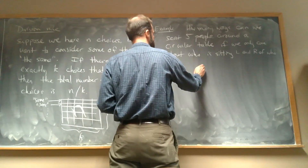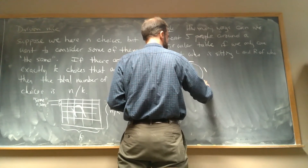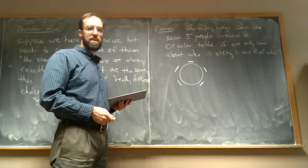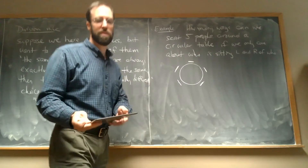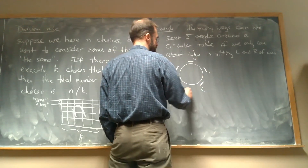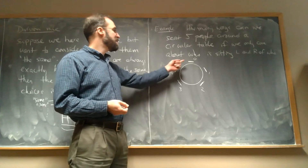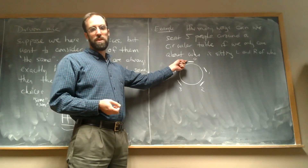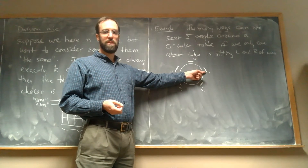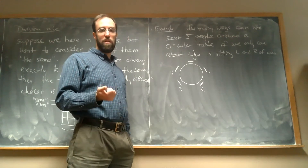Here's my table with some seats. I'll number the seats zero, one, two, three, four. I could say there are five choices of who to seat in seat zero, then four choices of the remaining people for seat one, and so on. So that would be five factorial.